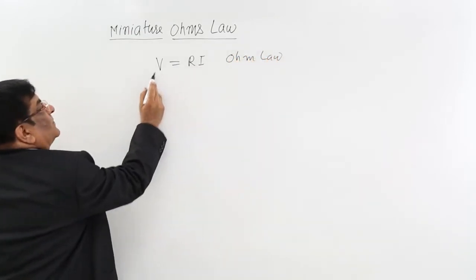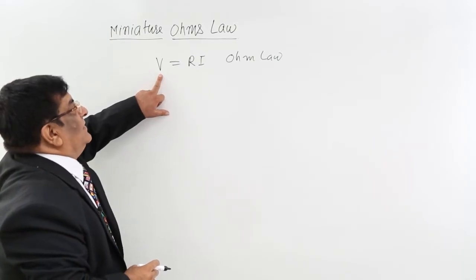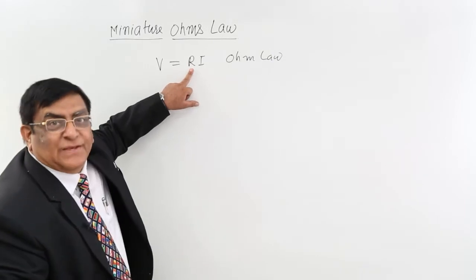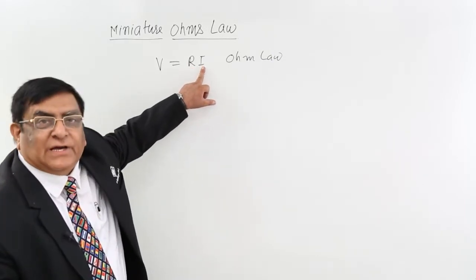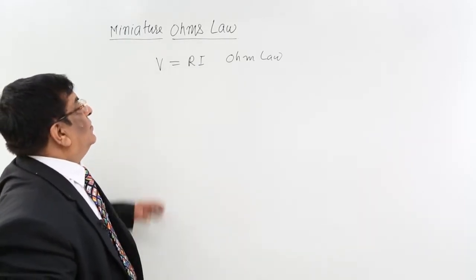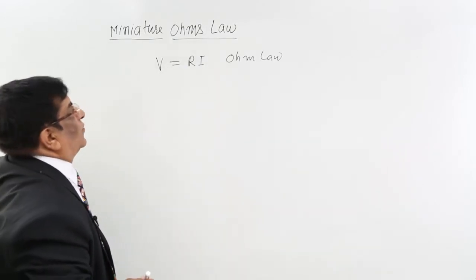Miniature form of voltage is electric field. Miniature form of resistance is specific resistance. Miniature form of electric current is current density J. We convert them all and that becomes the miniature form of Ohm's law.